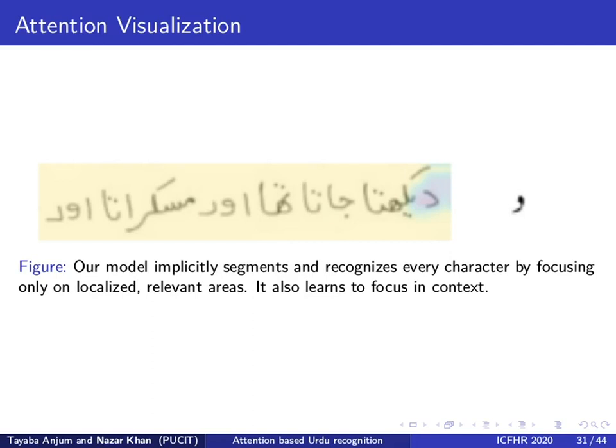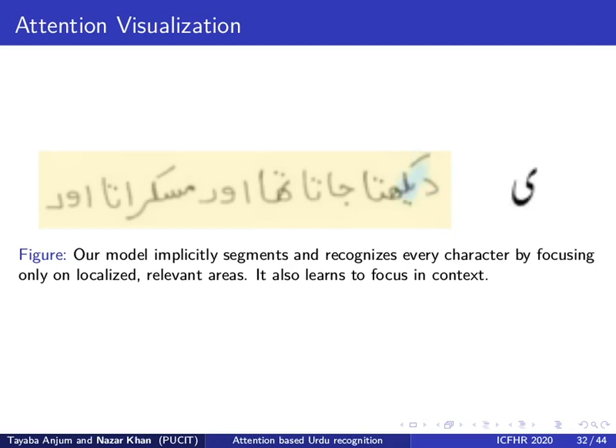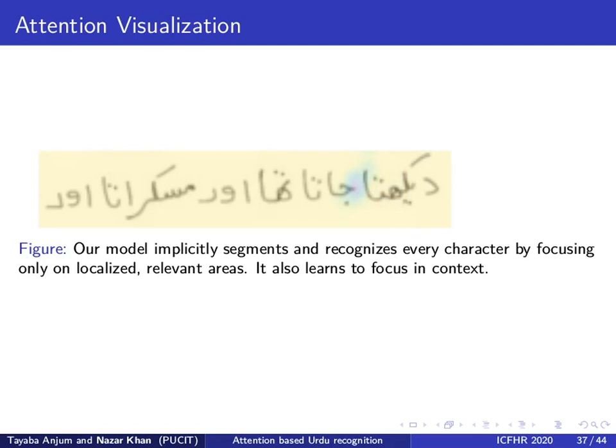Now let's move to some results. Here is a text line recognition result that demonstrates that our model implicitly segments and recognizes characters by focusing only on localized, relevant areas. The purple region indicates the region of attention, and the recognized character is shown in black on the right. We step through the second, third, fourth, fifth, and sixth characters, as well as the space between words. These results demonstrate that our model has learned to focus in context — for example, when recognizing the sequence of characters, it focuses on relevant regions moving from right to left, having automatically learned the right-to-left nature of Urdu.